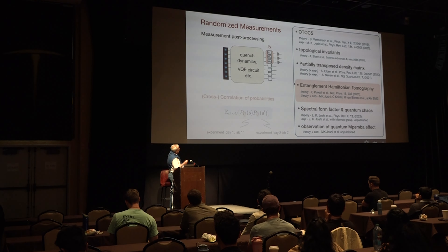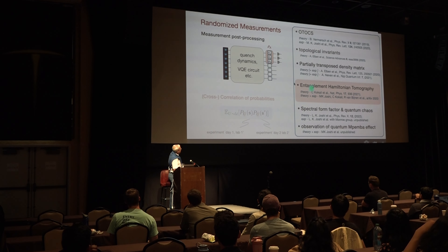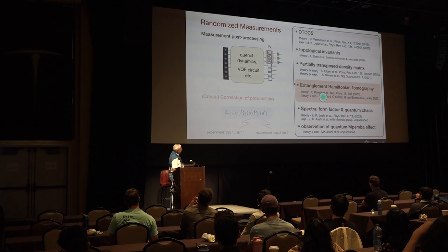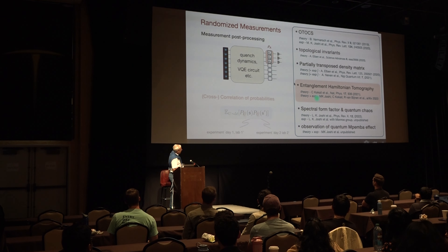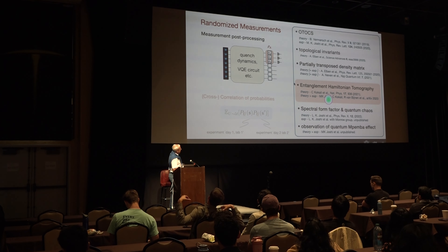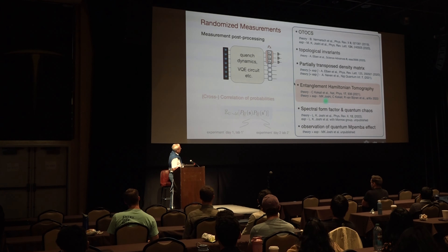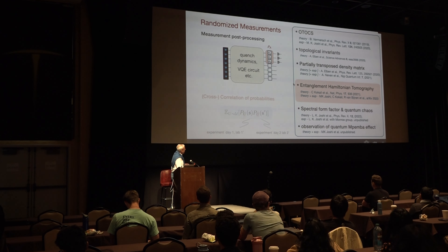We wrote a bunch of papers that are listed here, and I decided to pick up one of these papers on entanglement Hamiltonian tomography that developed in two stages. There was a theory paper — at that point we did have experimental data — then we went to convince the experimentalists to try some of these things. This is the measurement of the entanglement Hamiltonian.